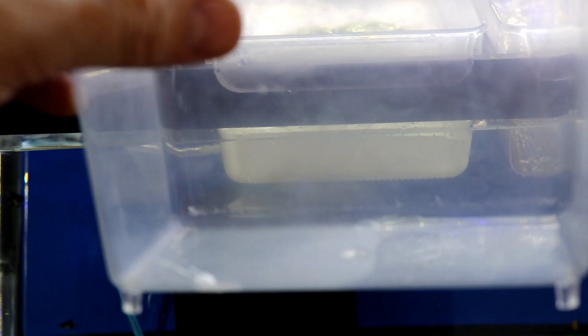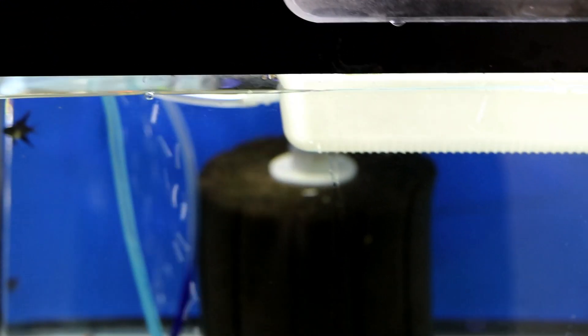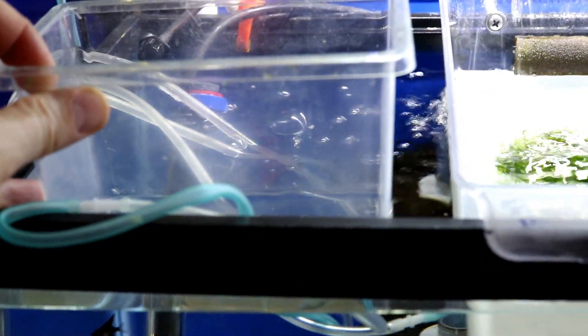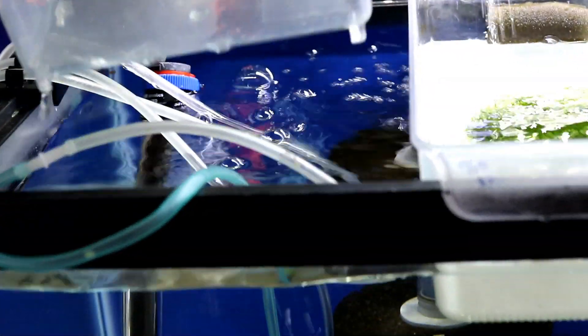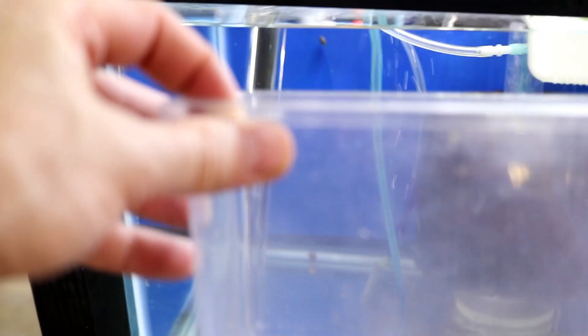And then I scrape off all the eggs into this container, I put one drop of the methylene blue, and then I take it and I just put it inside here. I just take it and I put it right inside here and I let it float that way it acclimates to the temperature of this water.